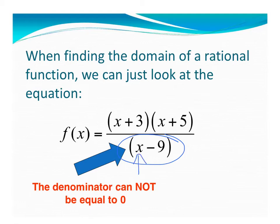So what would I plug in for x to make this denominator 0? If you're thinking 9, you're absolutely right. So if I had 9 minus 9, that equals 0, and I can't divide by 0. So my domain is all real numbers except x cannot equal 9.